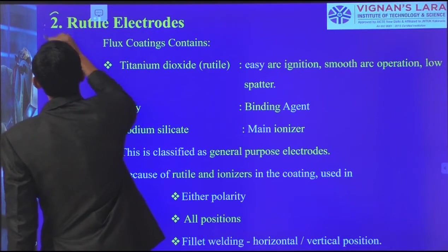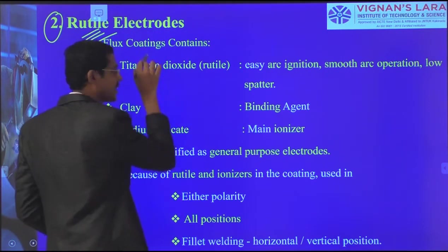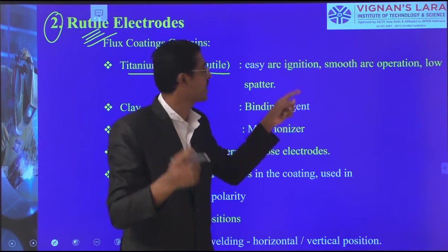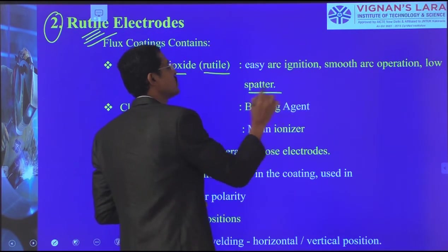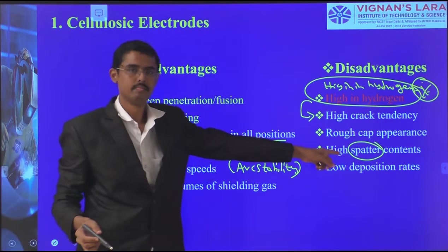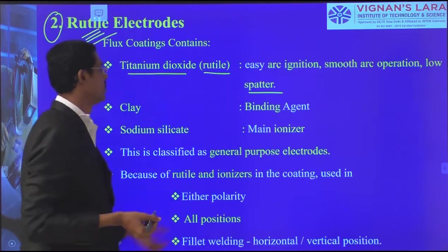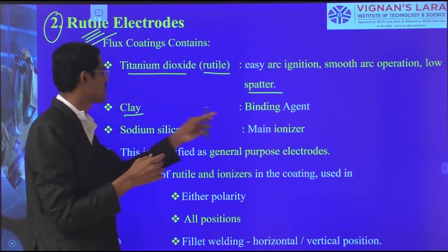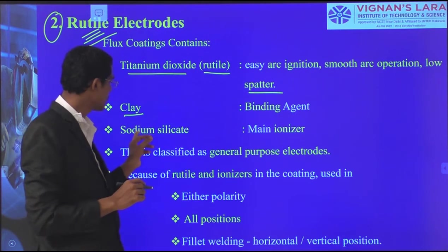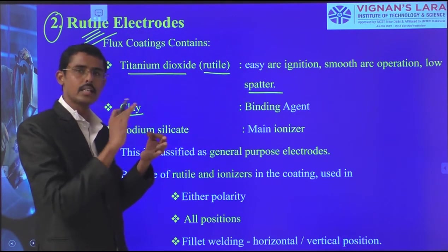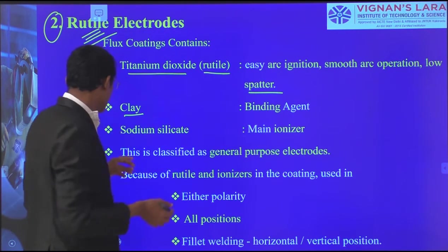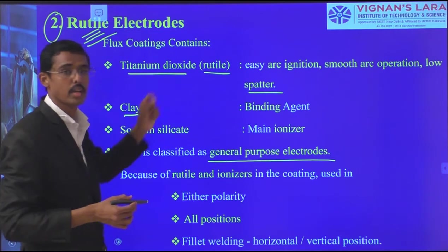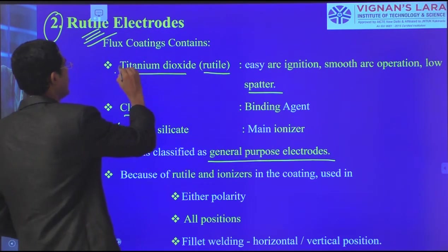Now we come to rutile electrodes. The flux contains rutile material — titanium dioxide — which takes care of arc ignition, smooth arc operations, and low spatter. Clay binders are added, and sodium silicate is added for all three electrode types as the main ionizer and arc stabilizer. This is classified as a general-purpose electrode because of the titanium dioxide rutile and sodium silicate ionizers. The coating can be used with either polarity — DCEP or DCEN — all positions.